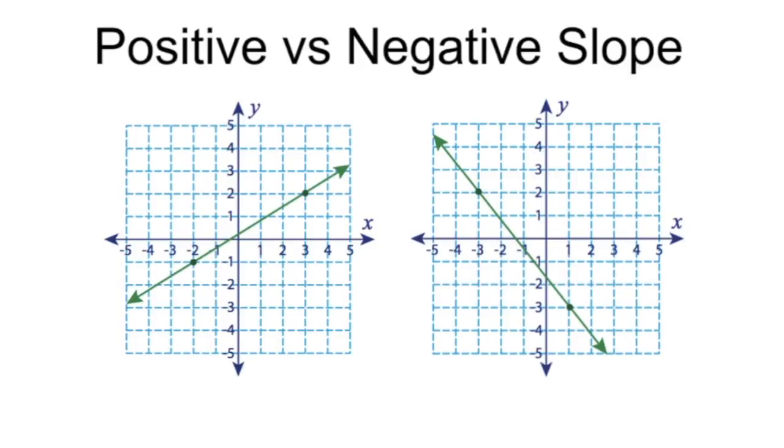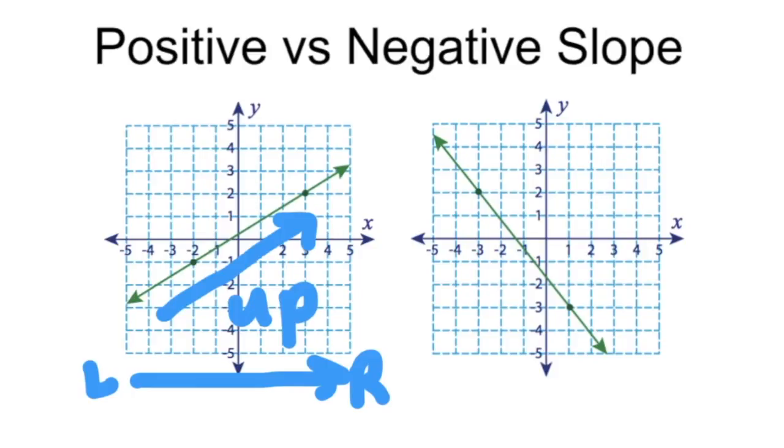Now slope can be positive or negative. Positive slope means you're going up. Negative slope means you're going down. And we always start on the left side of the graph and go to the right. So on this graph, I start on the left, I go to the right, the line is going up. So that means that this is positive slope.